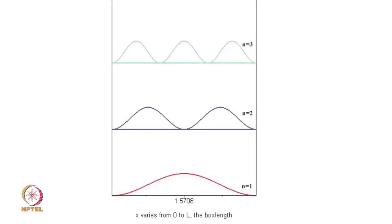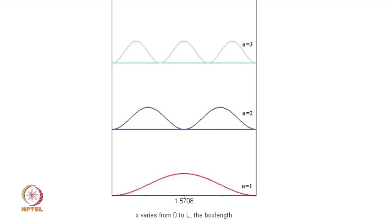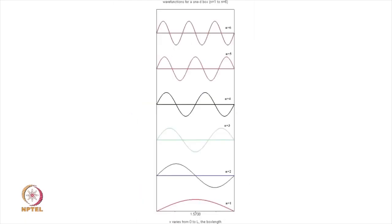If you plot psi star psi for the first wave function, namely n equal to 1, you see that this is the half sine wave with a little bit of tapering on the edges. When n equals 2, the wave function n equal to 1 is a half sine wave, n equal to 2 is a full sine wave, this is a 3 half sine wave and so on.